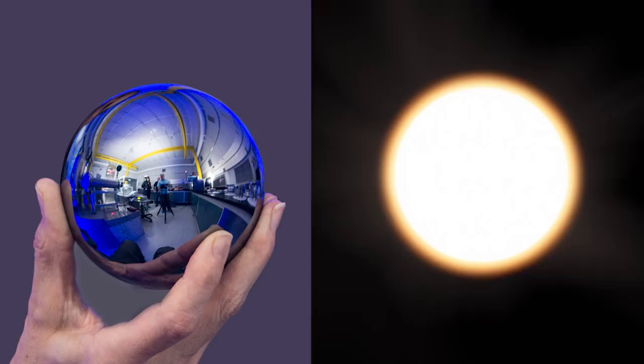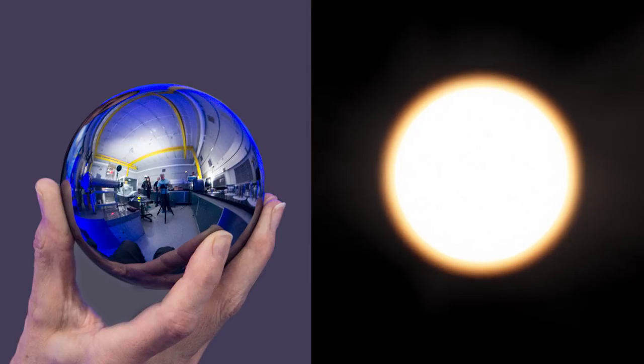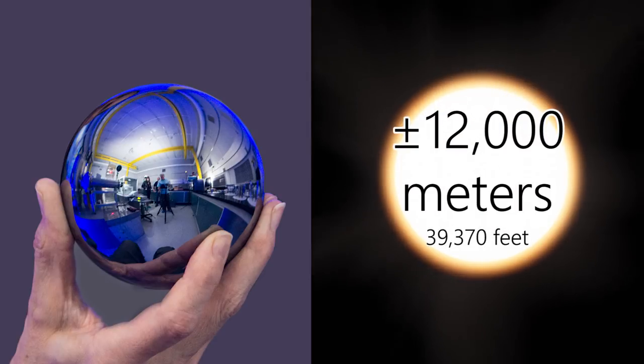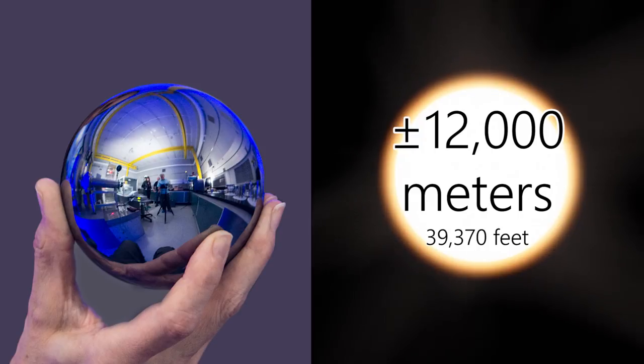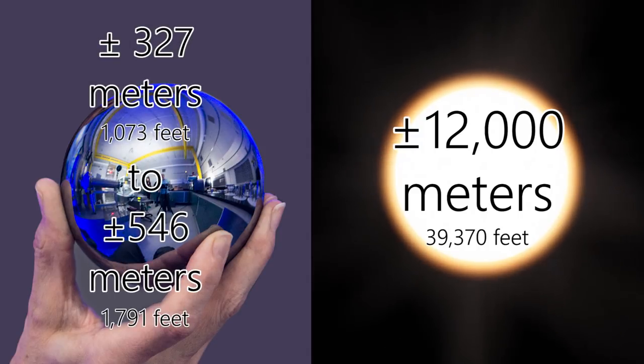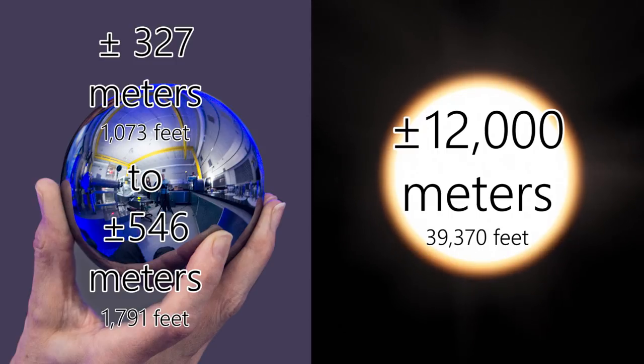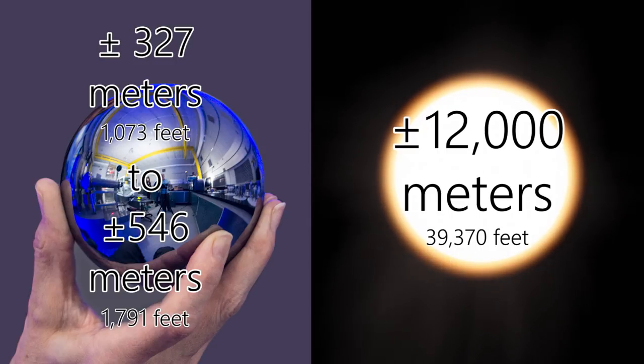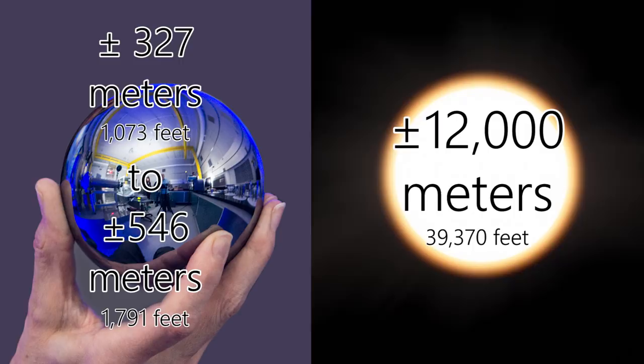If we blow up the size of one of those silicon spheres to the size of the sun, we find out that the highest and lowest points on such a sphere are between 327 meters to 546 meters. This is still less than the oblateness of the sun. If the sun can't beat these silicon spheres, is there any other star that could?